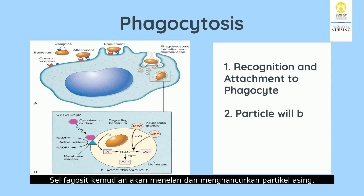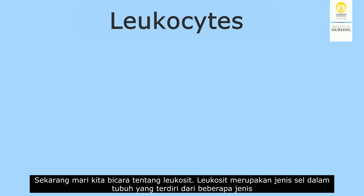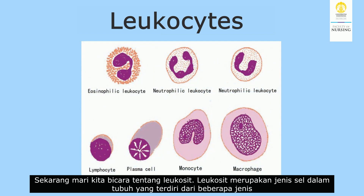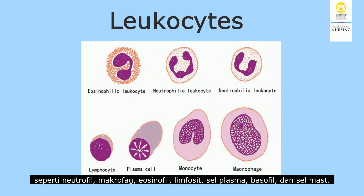After that, phagocytosis occurs. Phagocytosis is the recognition and attachment of particles to the surface of phagocytes; the phagocytic cells then engulf and destroy the foreign particles. Leukocytes are the type of cells involved, consisting of several types such as neutrophils, macrophages, eosinophils, lymphocytes, plasma cells, basophils, and mast cells.